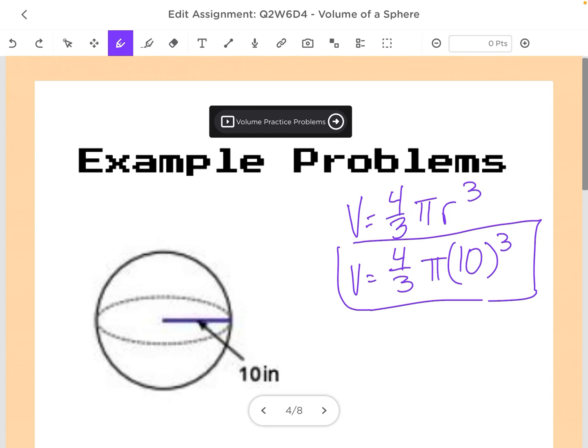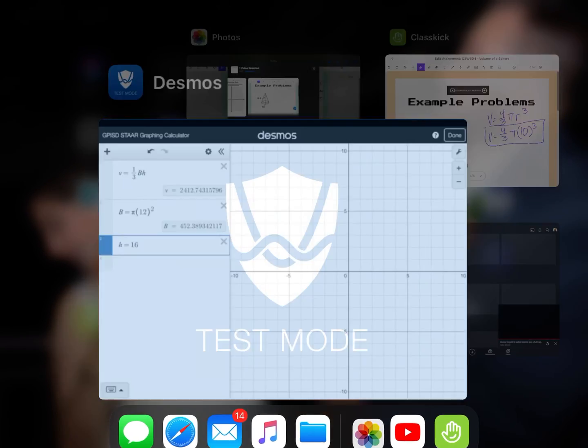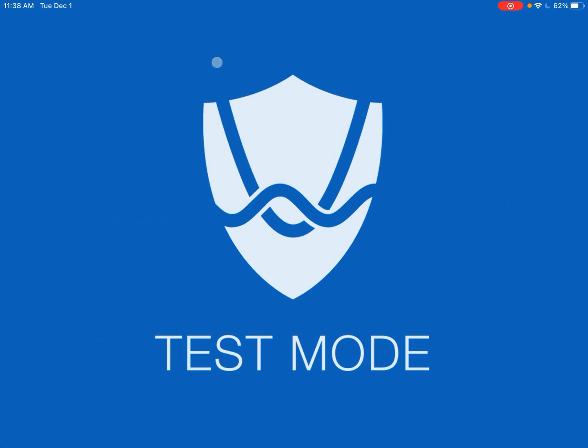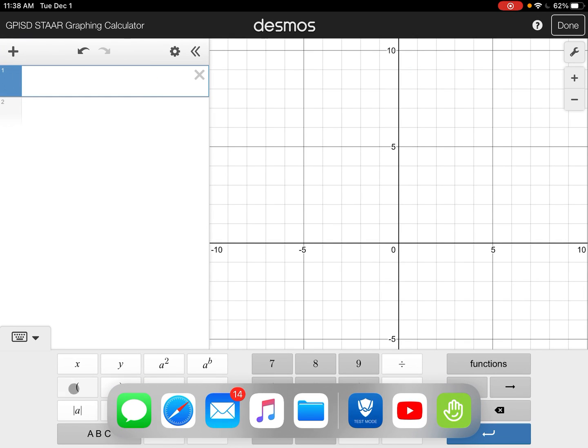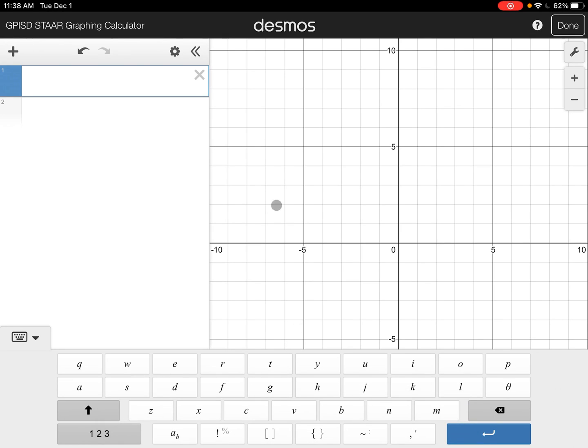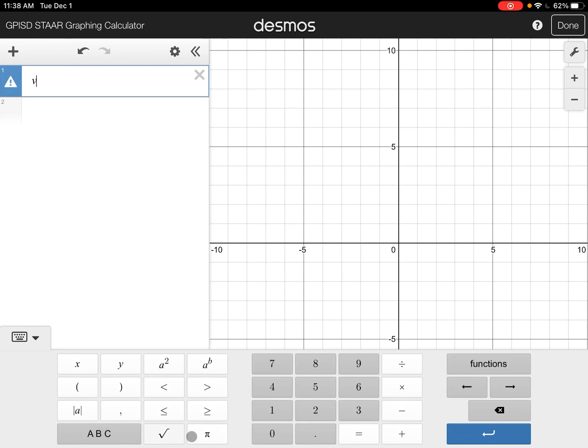I just take that and plug it straight into Desmos. So over to Desmos, we say volume equals four-thirds, I tap to the right, I tap to the right, pi, 10 was our radius.